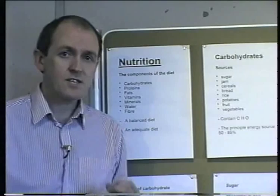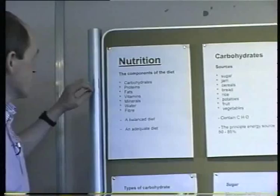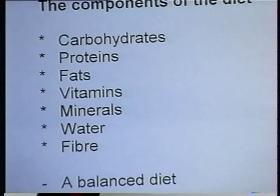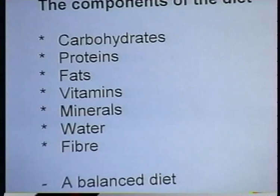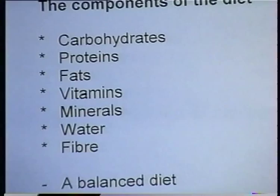The first thing we're going to look at is the components of the diet. There are seven essential food groups required in the diet — types of food which we must have in order to maintain health. These are called the seven components of the diet: carbohydrates, proteins, fats, vitamins, minerals, water, and fiber.